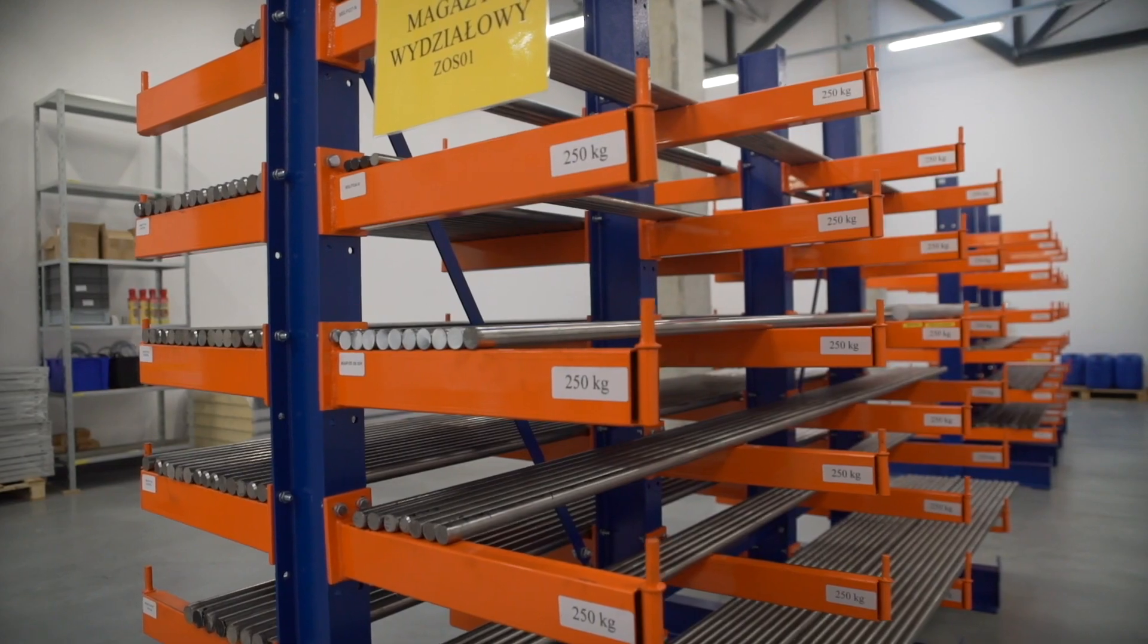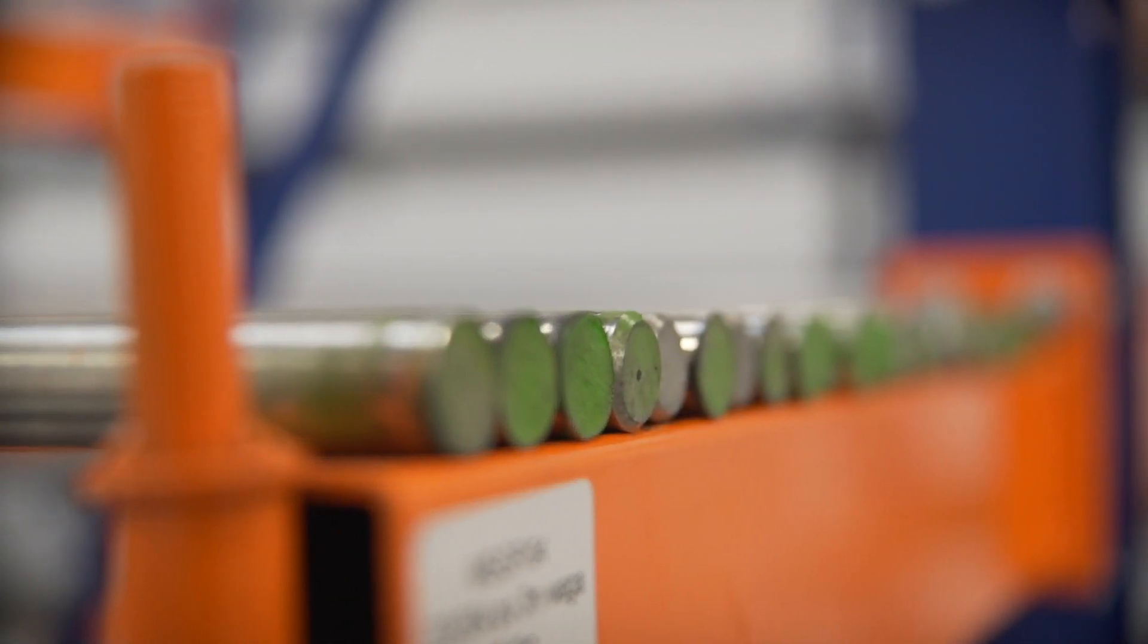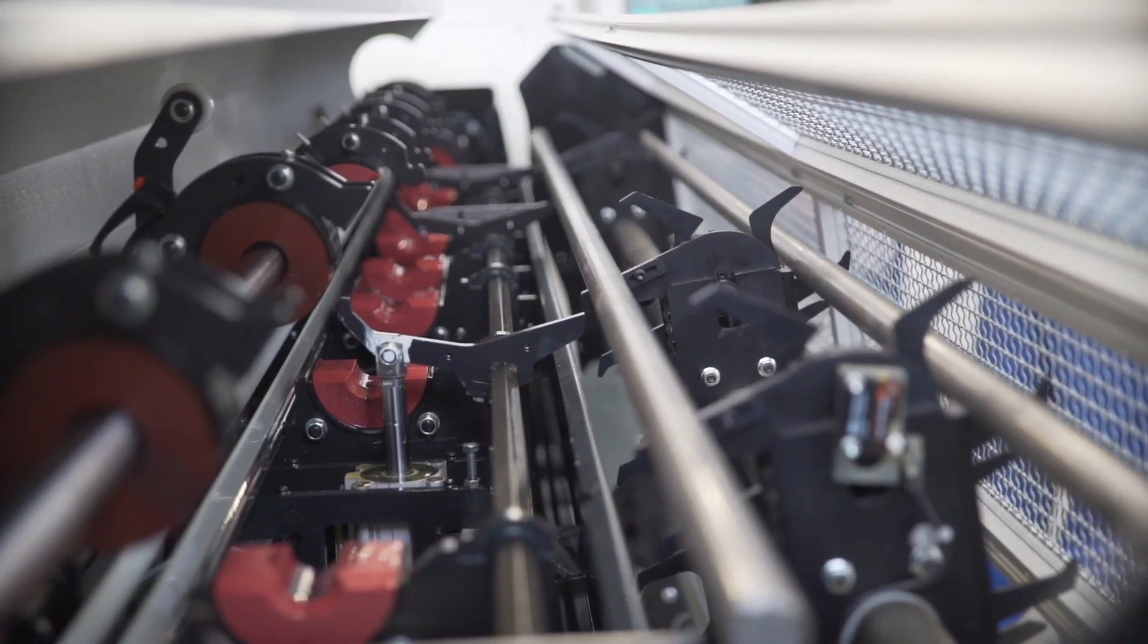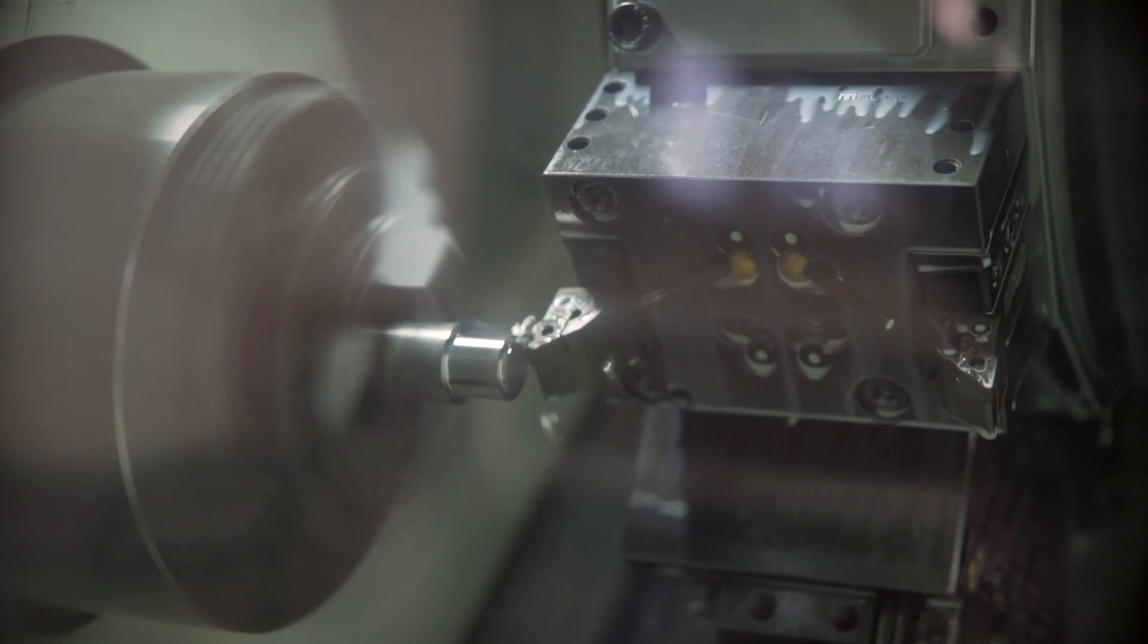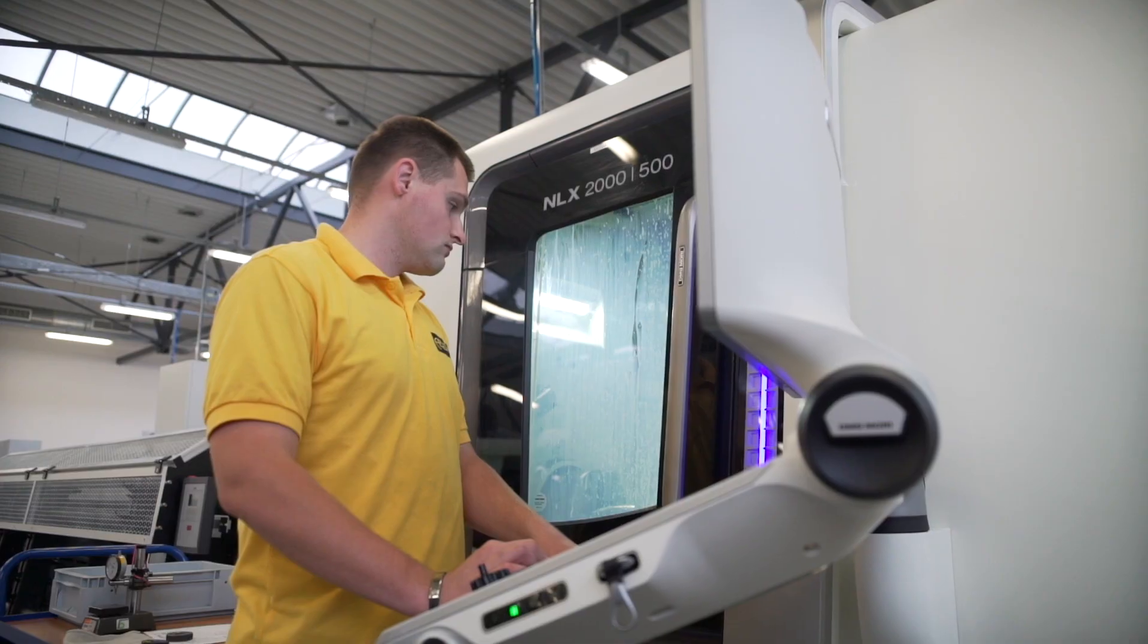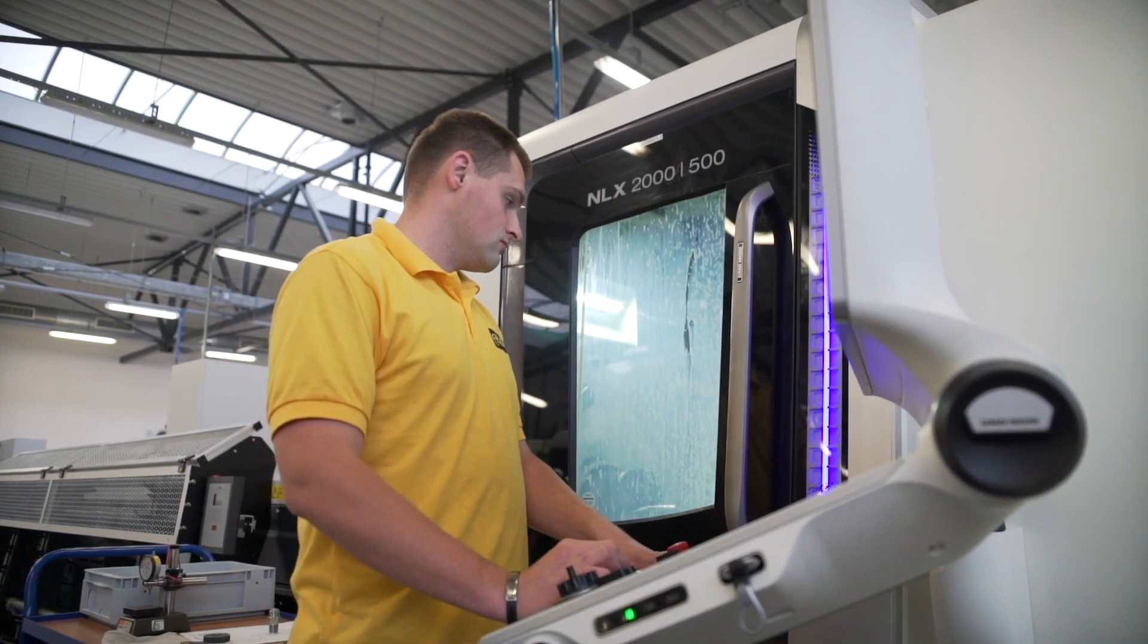Stainless steel or Hastelloy C are materials from which parts are produced. Bars of steel are cut into smaller elements and machined in CNC machining centers.